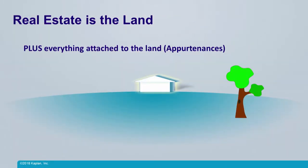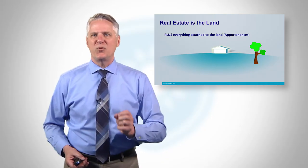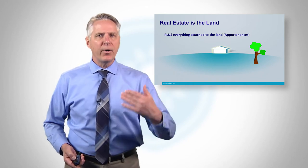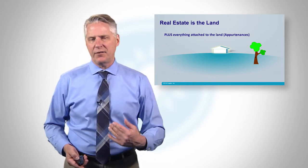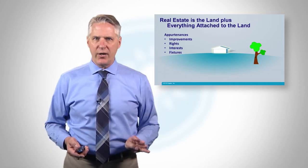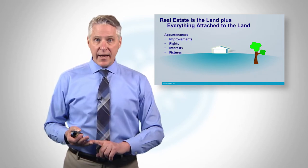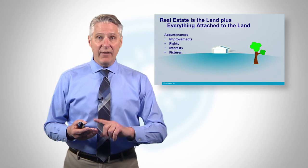Once again, real estate is the land plus everything that's attached to the land. And we call these things that are attached — in real estate speak, we call them appurtenances. You're going to see a lot of things if you start studying real estate that have different names than you might use in real life, and appurtenances is one of them. So the land plus appurtenances — everything that's attached to the land. We like to summarize these appurtenances into four broad categories: improvements, rights, interests, and fixtures.